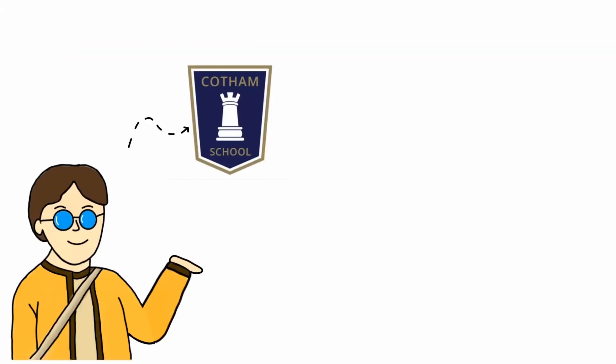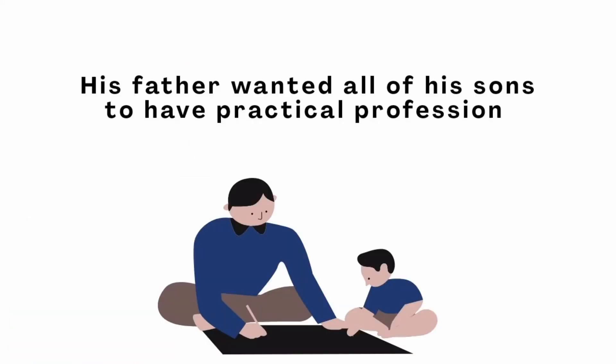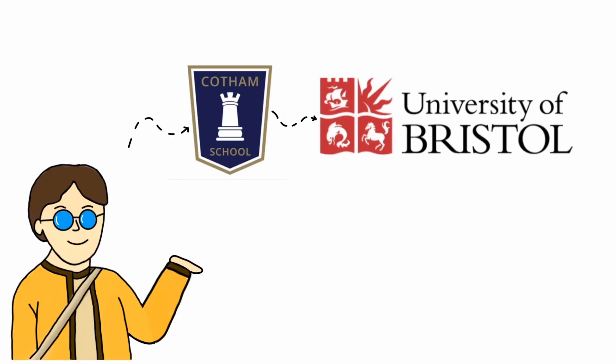Paul Dirac's education. He was educated at the Merchant Venturers Secondary School, Bristol. On his father's wish for a practical profession for his sons, Dirac studied electrical engineering at the University of Bristol from 1918 until 1921.